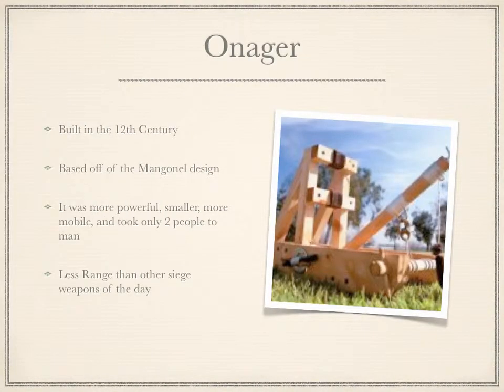The onager was actually a lot more powerful and had a lot more arc on it. It was named after a donkey because it would kick due to how powerful it was, and it was really used to lob things over castle walls during sieges.